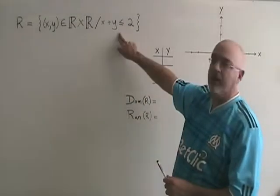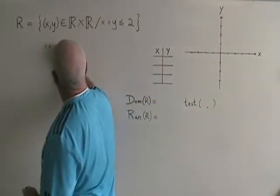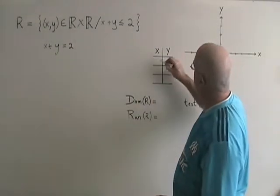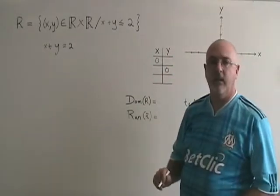The first thing I do is write the inequality as an equality. And now I'm going to fill in a table of values. I will start by finding the intercepts. If x is equal to 0,